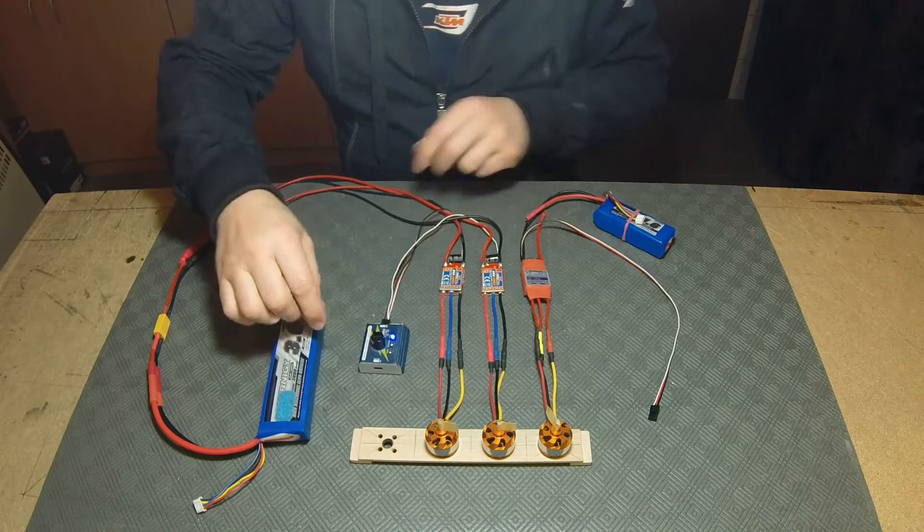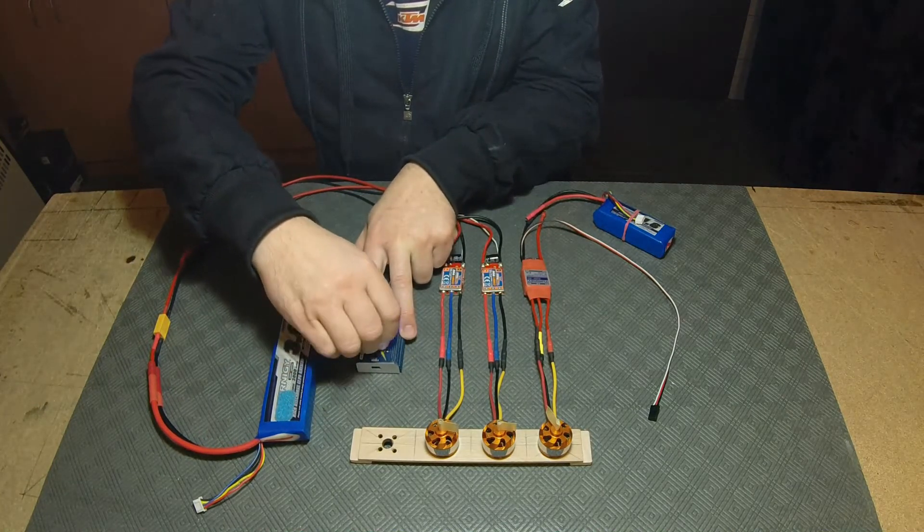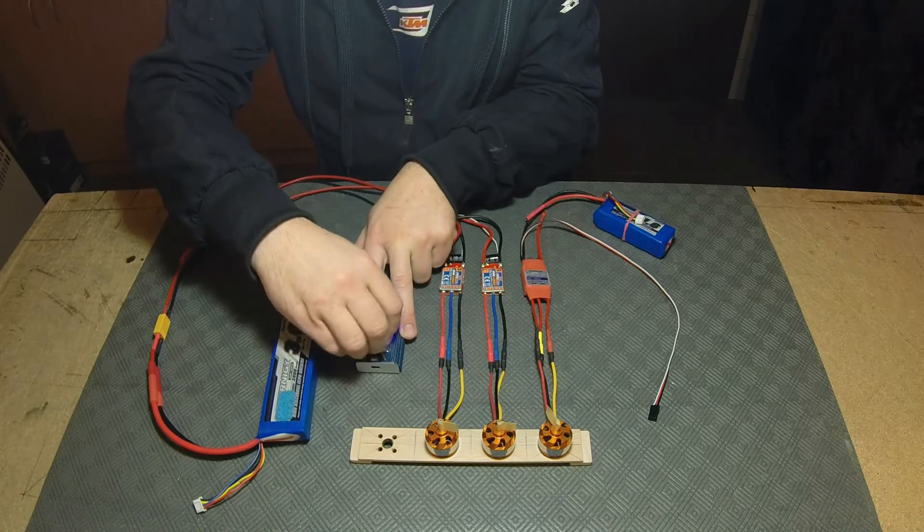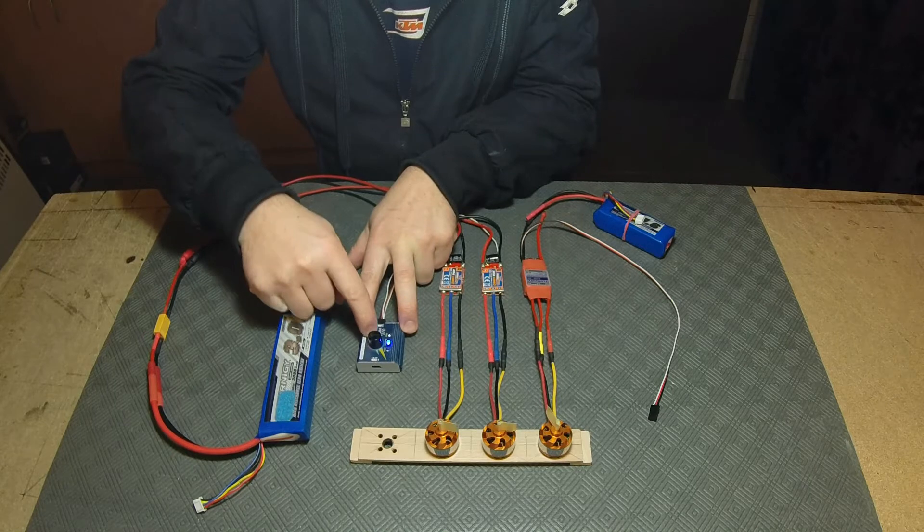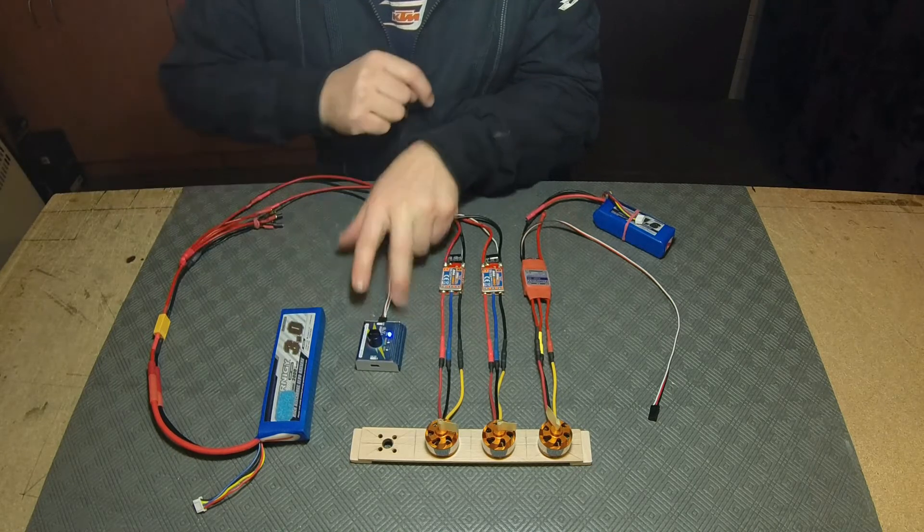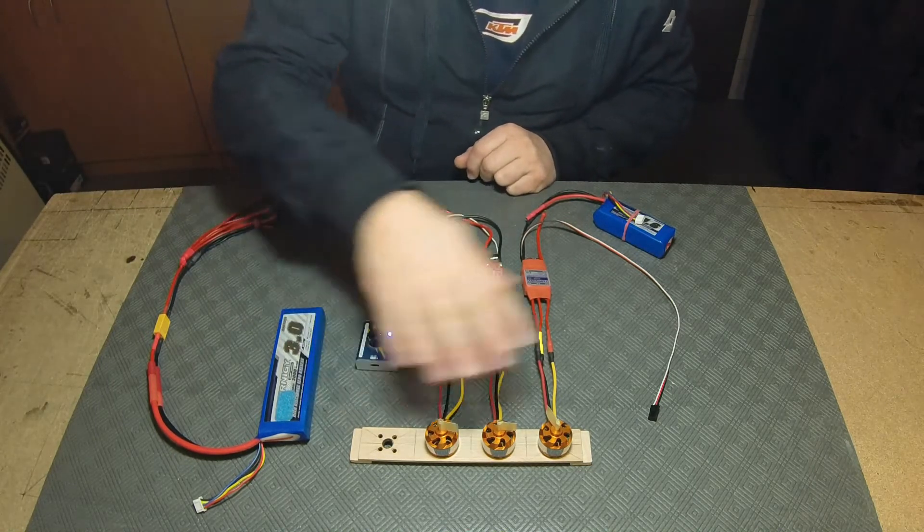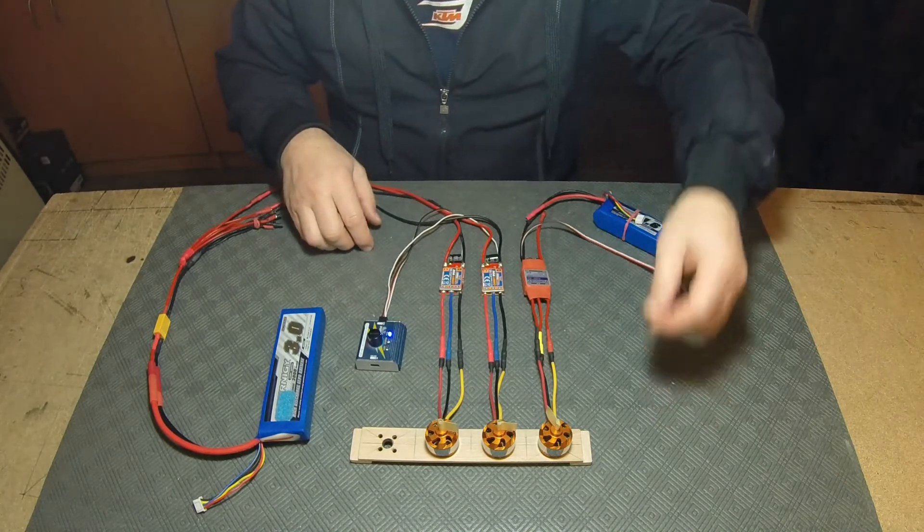We see a light on the servo tester. When I turn this button, nothing happens. Also when I change the position, nothing happens. There was also no sound from the electromotors.